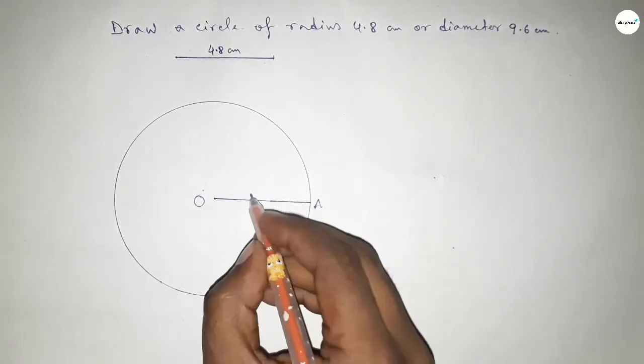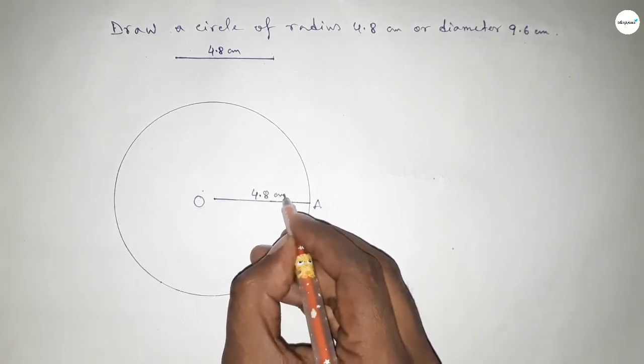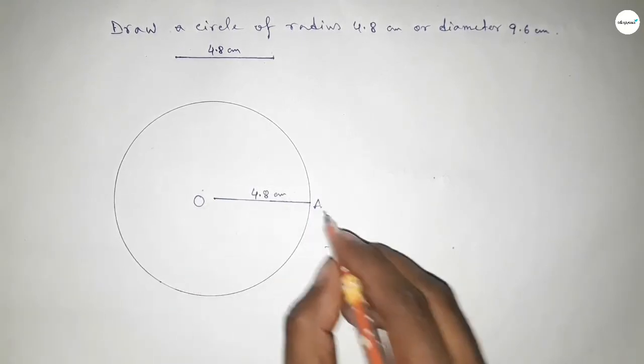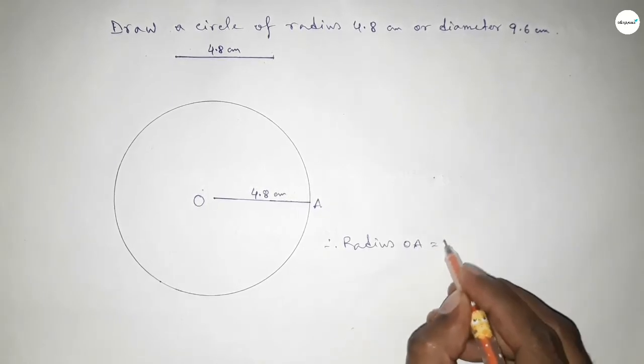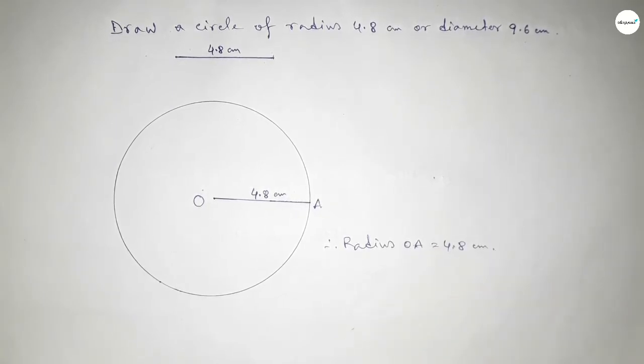Taking here the center O and here a point A, so OA equal to 4.8 centimeter, the radius. That's all, thanks for watching. If this video is helpful to you, then please share it.